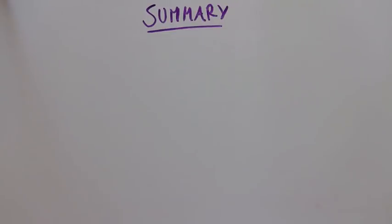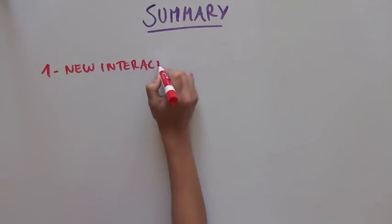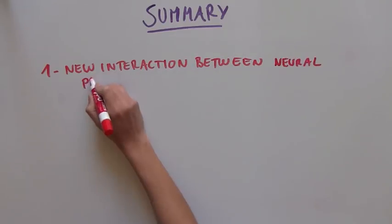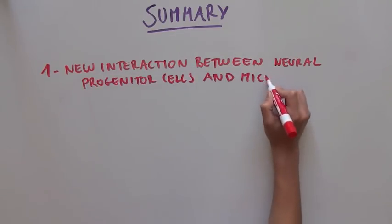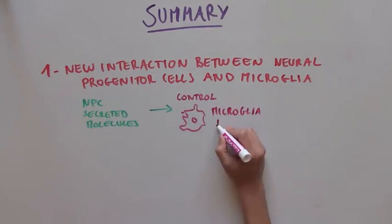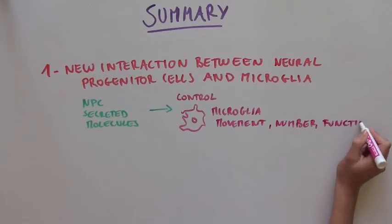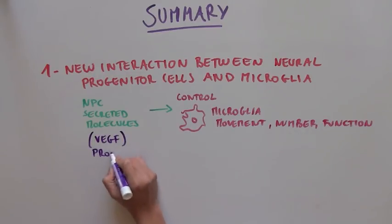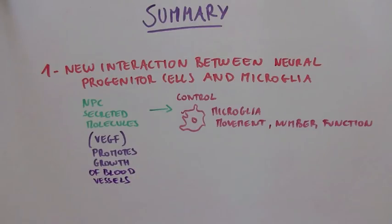So what did this study show? This study identified a new complex interaction between neural progenitor cells, or NPCs, and the microglia that surround them, where NPCs secrete molecules that control microglia movement, number, and function. The scientists found that a factor that promotes the growth of blood vessels is responsible for this.